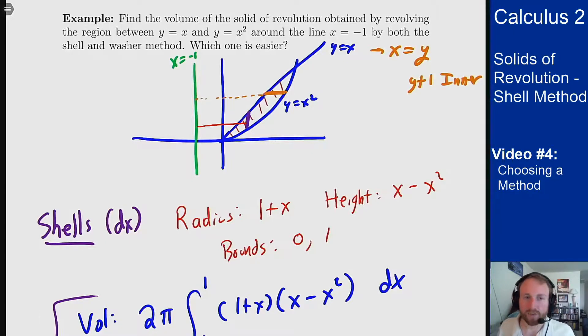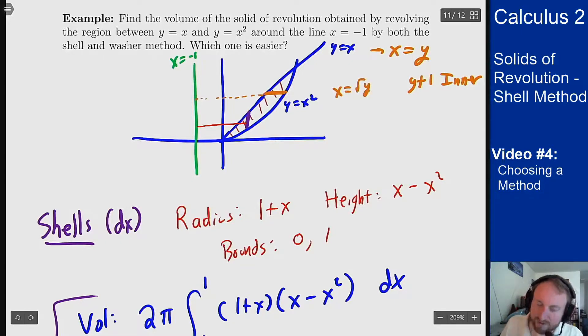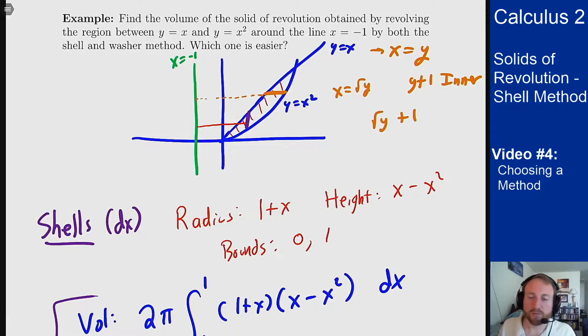What about the outer? Well the outer has to go all the way to the y equals x squared which when I solve out the other way is x equals square root of y. So by the same logic my outer radius should be square root of y plus one and then my bounds go from zero to one like before because it's on y equals x and those are where those lines cross.